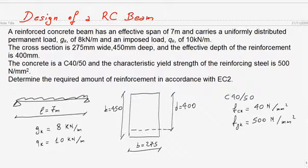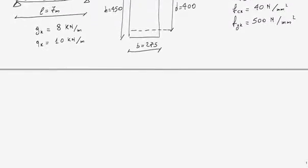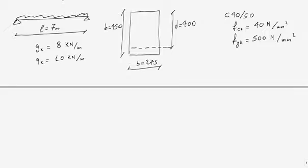First, I need to find the factored design load, including all permanent and imposed loads. The self-weight is not given, so I need to calculate it. To calculate the self-weight, I need the density of concrete, which is 24 kN/m³, and the beam dimensions.